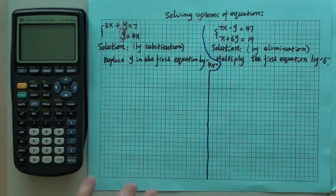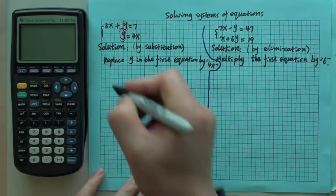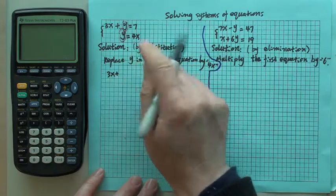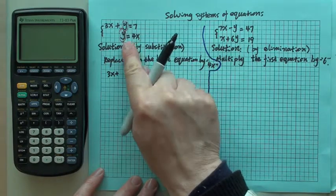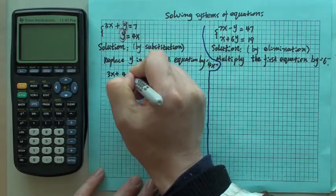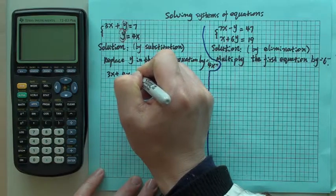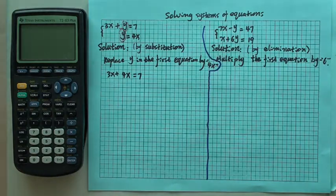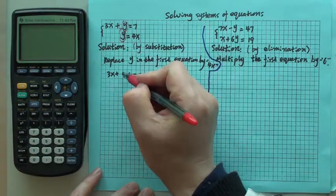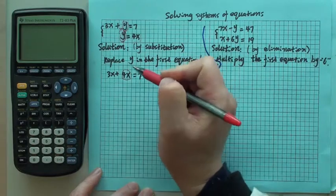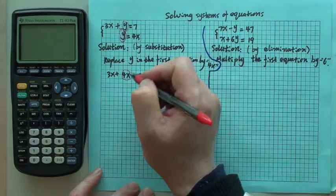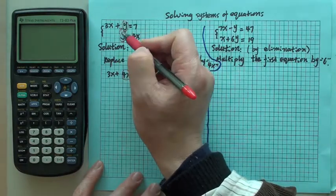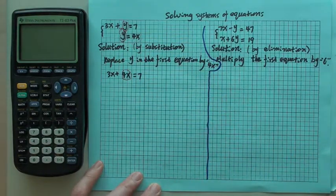So once we did that, then you will see 3x plus y is replaced by 4x. So you write 4x there, and then equals 7. So you can see down here, this one was y. Now we replaced by what? By 4x.